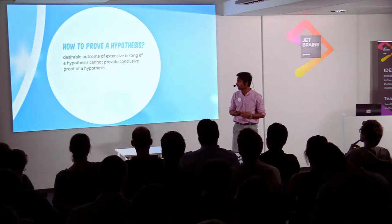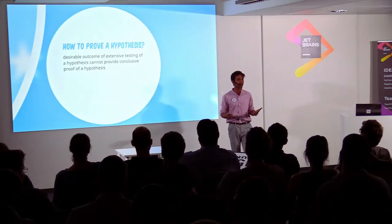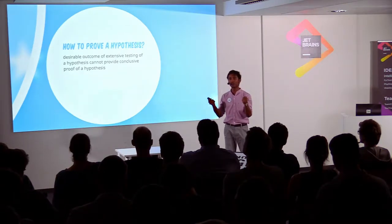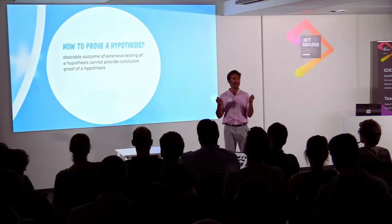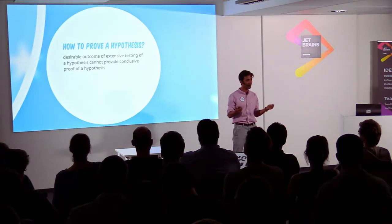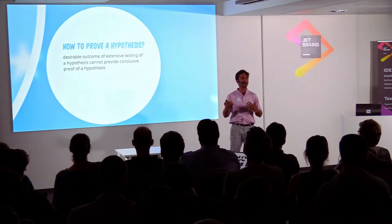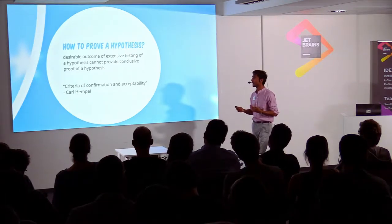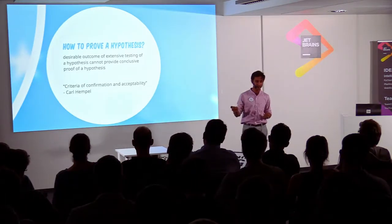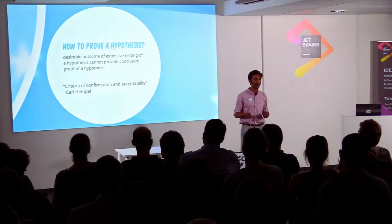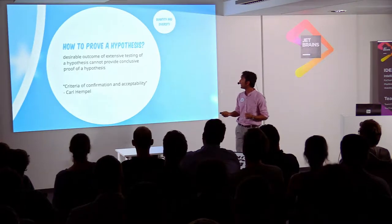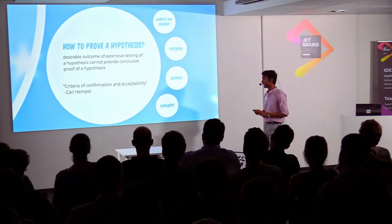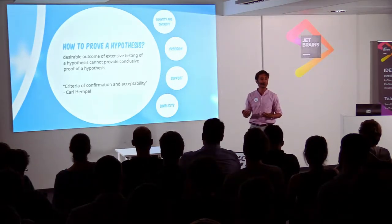It is not easy in science to prove a hypothesis — it takes a lot of effort. Just because you have some good results does not mean you can make a theory out of it. We have to have some criteria for when we can promote a hypothesis to a theory. That problem was solved by Carl Hempel when he gave us the criteria of confirmation and acceptability. The idea is that if a hypothesis has elements such as quantity and diversity, precision, support, and simplicity, it can be promoted to a theory.